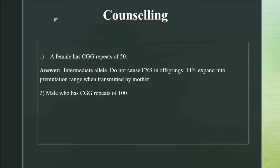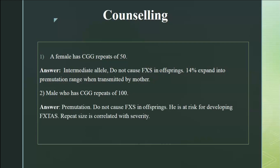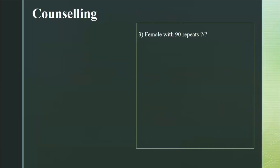If a male has a repeat of 100 — that is pre-mutation range (55 to 200) — how will we counsel? For his future generation: if he transmits to a female, the female can have a pre-mutation, and her next generation can be affected with Fragile X syndrome. But expansion into full mutation when transmitted by a male is very unlikely. He himself is at risk of developing Fragile X tremor ataxia syndrome, an age-dependent phenomenon, later in life.